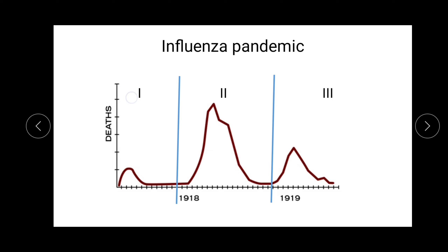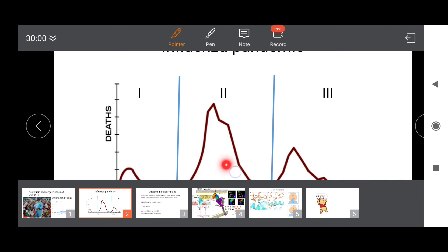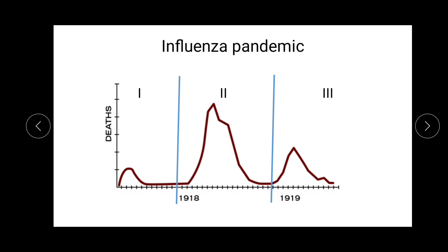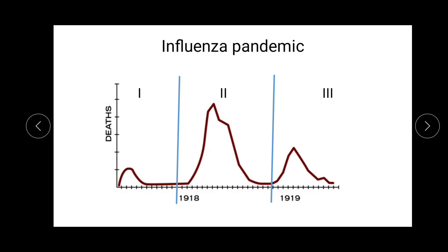That pandemic also came in three waves. The first wave was not as strong as the second and third, but the second one was very deadly — there was about a three or four fold increase in deaths compared to the first wave. You can correlate the same with COVID: the first wave was not as deadly as the third. This is not the first time a virus is showing this behavior; it has shown it in the past.